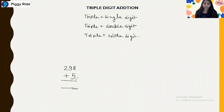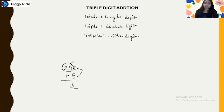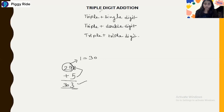Let's take another example: 298 plus 5. Take the two leftmost digits, which is 29, as a group. This is a carry number: 8 plus 5 is 13, so 3 will be the end number. Then 29 increases by 1 because we have a carry from 13, so 29 becomes 30. The answer is 303.